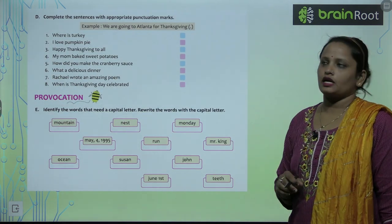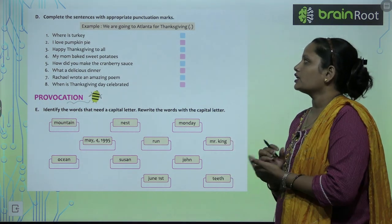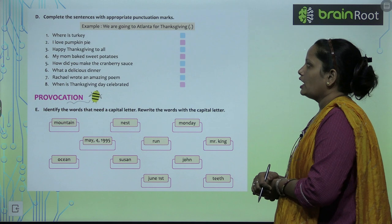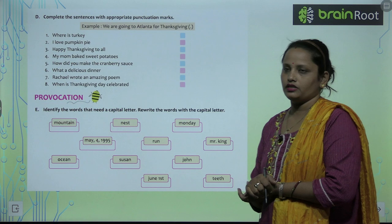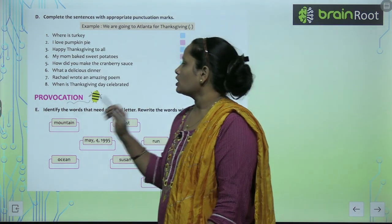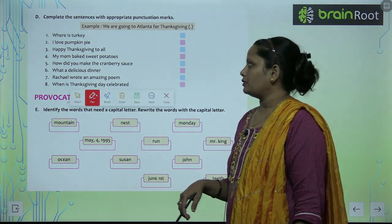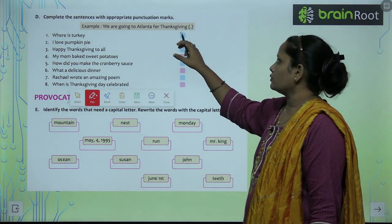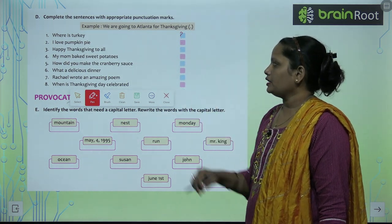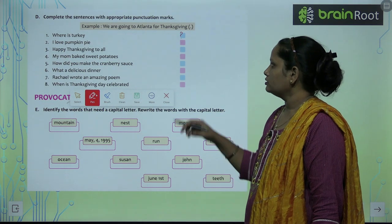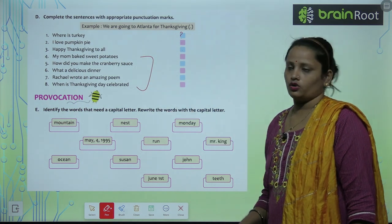Next question: complete the sentences with appropriate punctuation mark. One example is given: 'We are going to Atlanta for Thanksgiving.' — full stop lagaya hai. 'Where is Turkey?' — question poocha ja raha hai, toh question mark. 'I love pumpkin pie.' — full stop. 'Happy Thanksgiving to all.' — full stop. Complete these on your own.